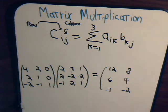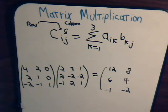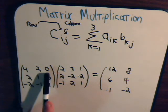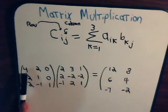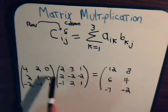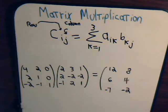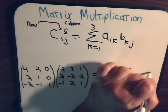We continue on in like manner. To get this number, we go back to the first row, go across the first row, and down the third column. Here we have four times one is four, minus four is zero, zero times one is zero, that gives us a zero here.